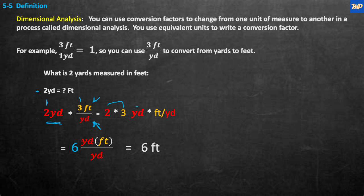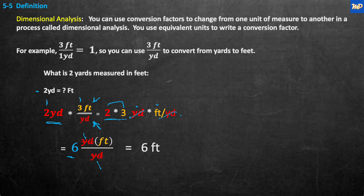We have yards times feet per yard, which ends up being yards over yards — they cancel out. So two times three is equal to six, the yards cancel, and you end up with feet. So the answer is six feet. The question was: what is two yards measured in feet? Six feet.